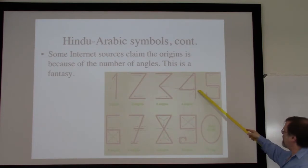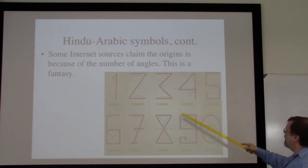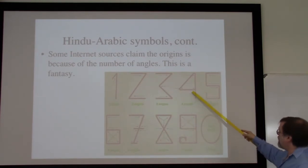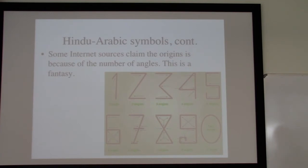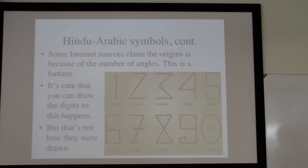This is sort of looking at the development after several thousand years, looking at what they turned into, and then saying, well, if I wrote these in exactly the right way, I would end up with the total number of angles inside. But almost everybody actually writes a four with the line coming all the way through — this form where we stop it is used in some fonts, but not in most historical use. It is cute that you can draw the digits so the number of angles equals the number itself, but that's not how they were drawn. That's just a fantasy history, an alternate reality.